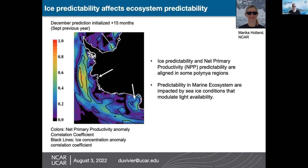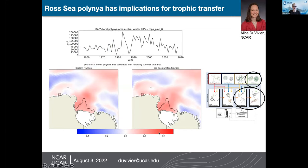We're also looking at how polynias affect trophic transfer. Using the hindcast time series of total winter polynia area in the Ross Sea, we correlated that with the fraction of production by diatoms or large zooplankton — types that more directly feed fish or penguins. We find a positive correlation: when there are more polynias, there appears to be more efficient trophic transfer, with more of these large phyto- and zooplankton types that feed predators.